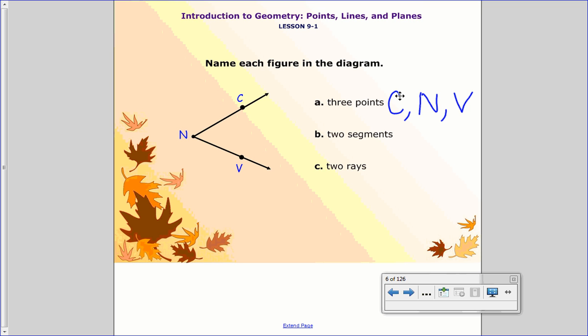There are two segments, well, I see segment NC, or, again, segment CN, if you named it that way. There's also segment NB, or, again, you might have put it BN.